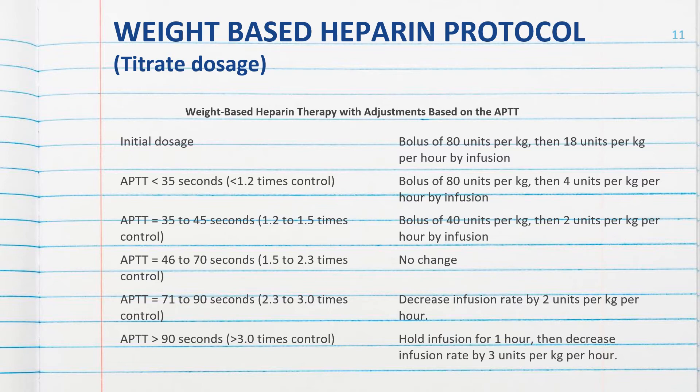On the left side of the protocol you see what the PTT comes back as, and on the right side, what you need to do to titrate the dosage for your patient to keep them in the therapeutic range. You want to give enough heparin so they stay in the therapeutic range and do not form a bigger clot or new clots.